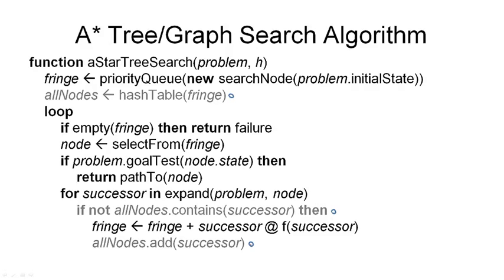But let's have a look at the tree search algorithm first. So we define a function A* tree search that takes two parameters. The first is our search problem, and the second is the heuristic that we're using. This may or may not be an admissible heuristic. The first thing we do then is initialize our set of fringe nodes, and we initialize the fringe from our initial state that was given in the problem.